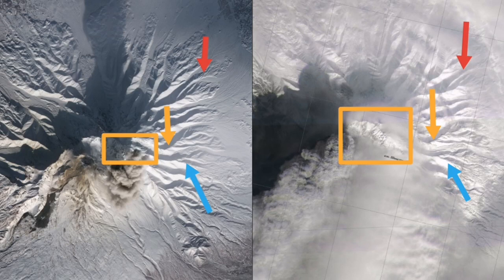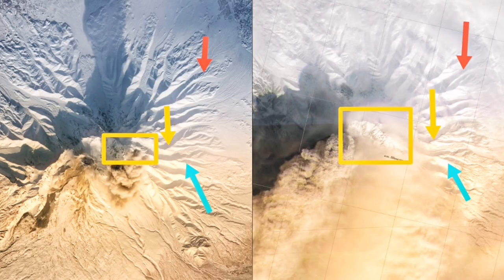I've marked similar landmarks on both images to find which vent is erupting now. When we identify these familiar features, we come to the conclusion that this vertical wall toward the right in that rectangle is the one we also see in the left — the past image. When we mark the landmarks with the green arrow, we conclude that the erupting vent is this one.